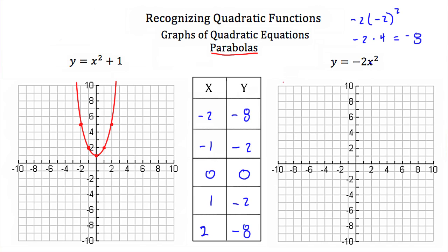So once again, we have five ordered pairs to plot. We go to negative 2 on our x-axis and negative 8 on our y, which is right here. Negative 1, negative 2 is right here. 0, 0. 1, negative 2. And 2, negative 8. Now we're going to connect these points with a smooth curve, and our graph will look something like that. Notice that when we had a positive coefficient on our x-squared term — here we had a positive 1 — our parabola opened upward. Here we have a negative 2, and our parabola opens downward. If your x-squared term has a negative coefficient, your parabola will always open downward. And if you have a positive coefficient on your x-squared term, your parabola will always open upward.